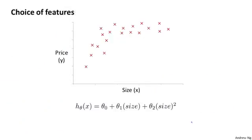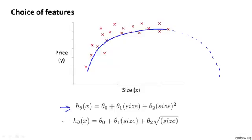Finally, here's one last example of how you really have broad choices in the features you use. Earlier, we talked about how a quadratic model like this might not be ideal because maybe a quadratic model fits the data okay, but the quadratic function goes back down, and we really don't want housing prices to go down to predict that as the size of the house increases. But rather than going to a cubic model, you have maybe other choices of features, and there are many possible choices.